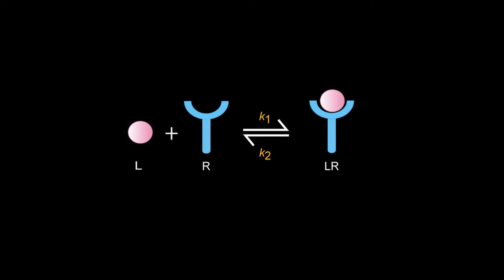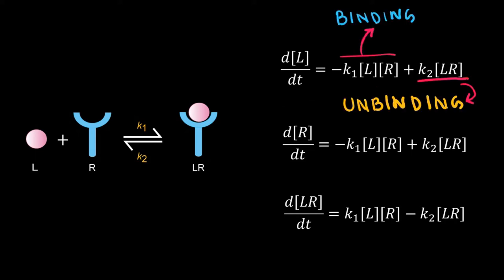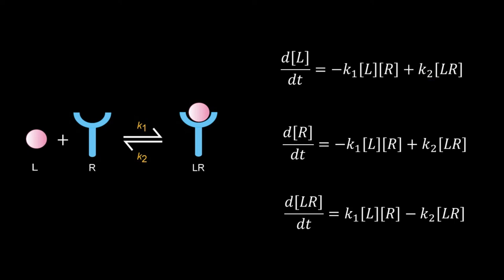This is a bidirectional process. The ligand binds to the receptor through non-covalent interactions, and due to thermal fluctuations the complex also dissociates to give free ligand and free receptor. We can use the law of mass action: dL/dt equals minus k1 times L times R, plus k2 times LR. k1 times L times R is for binding and k2 times LR is for unbinding. L and R are the concentrations of the free ligand and receptor. We can write similar ODEs for R and the complex LR.